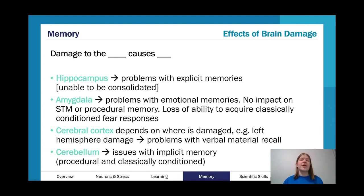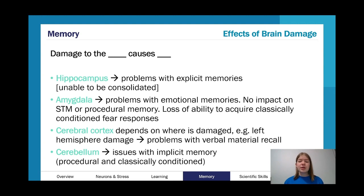When looking at the effects of brain damage, you apply what you know an area is responsible for. Hippocampal damage leads to difficulties consolidating explicit memories. Amygdala damage means less emotional significance attached to memories — for example, a reduced ability to acquire a classically conditioned fear response. Neocortex damage depends on where — since it stores memory, damage impacts retrieval accordingly. Cerebellum damage causes issues with implicit memory. I highly recommend doing previous study design exams, as there are large areas of overlap and you can really benefit from that learning.